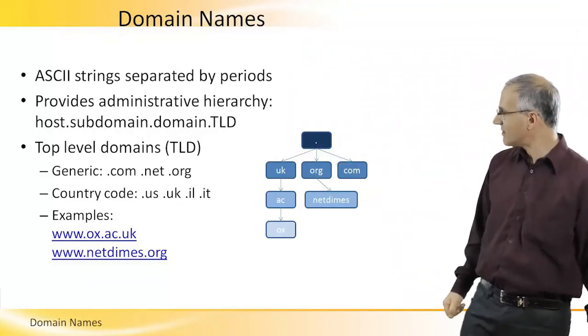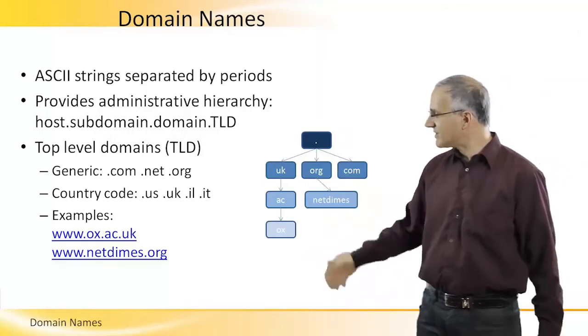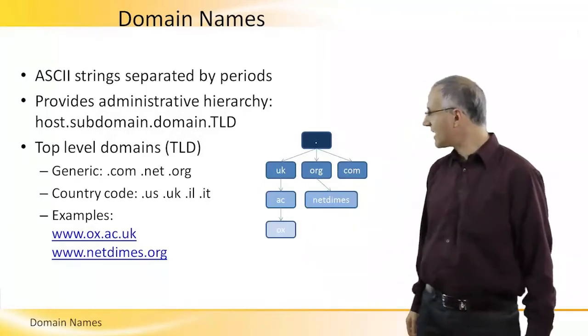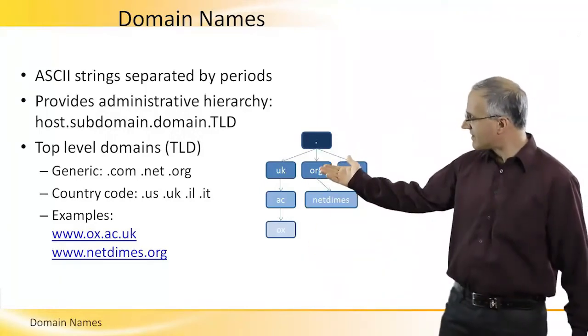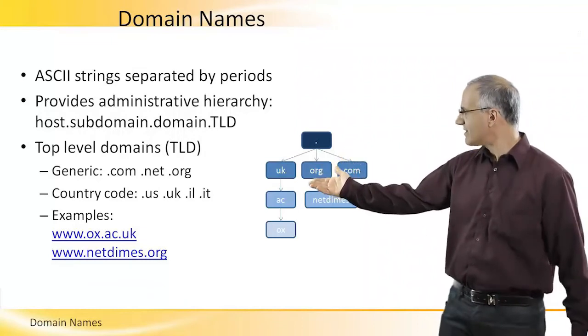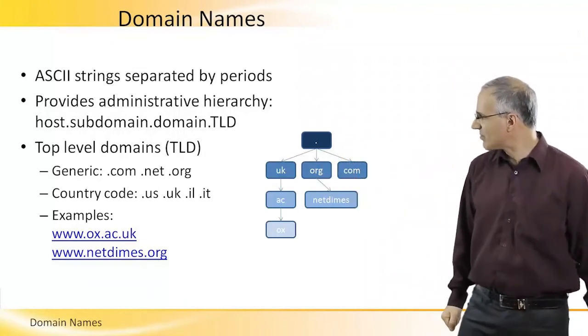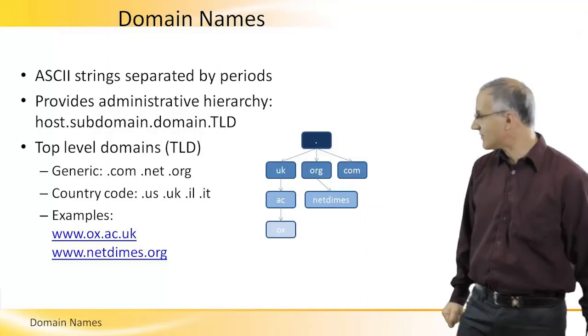For example, in the case of the United Kingdom, we have a domain called .ac for academic networks, and under the .ac domain, there is ox, which is the domain name for Oxford University.